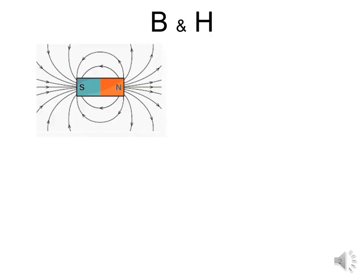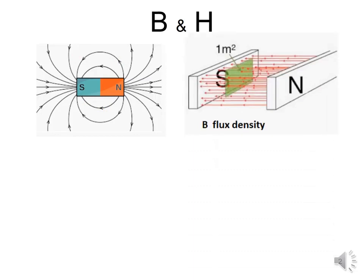Before we study the actual lecture, let's have an understanding about the magnetic flux density called B and the magnetic field intensity called H. From a magnetic pole, the flux lines flow from north pole to south pole. If we take an area of 1 square meter and count the number of flux lines in that, that will be called the flux density — the number of flux lines per unit area. One definition is that flux density B is flux phi divided by the area of cross section.